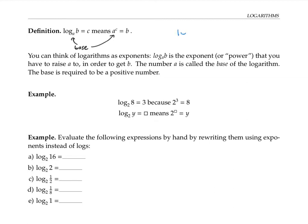Some students find it helpful to remember this relationship — log base A of B equals C means A to the C equals B — by drawing arrows. Other students like to think of it in terms of asking a question: log base A of B asks, what power do you raise A to in order to get B?